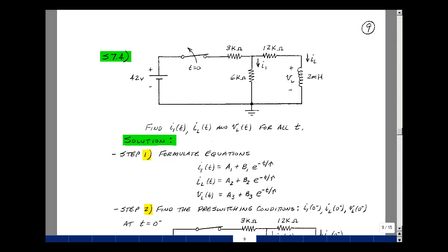The first step is to formulate the equations. Since we have a first-order differential equation, the form of our solution for any voltage or any current is A plus B times E to the minus T over tau. Since we have three variables, let's use three subscripts.